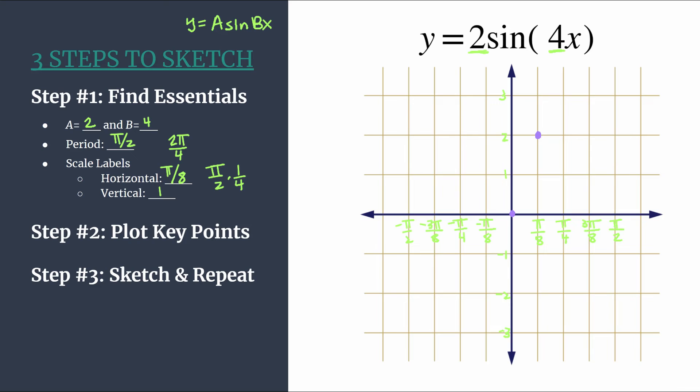Then our next key point will be another zero, and that'll happen at our next horizontal tick mark. So we have another zero at π over 4. And our final point for this cycle of the pattern is going to happen with an x coordinate at our next tick mark, so at 3π over 8, and a y coordinate that's just the opposite of a. So our y coordinate for this point will be negative two. So you see that symmetry happening.